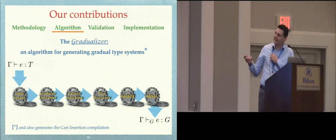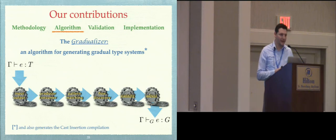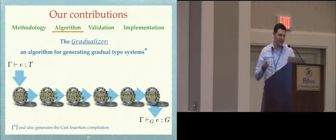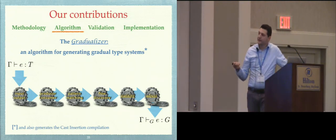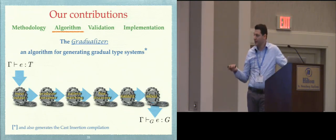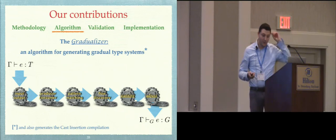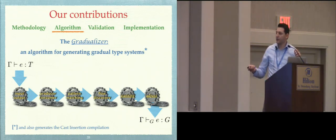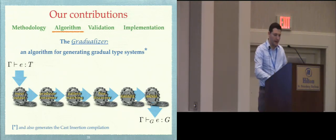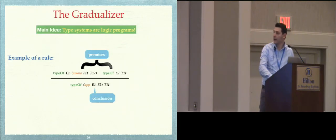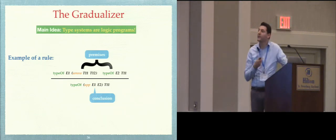The Gradualizer is an algorithm that makes the methodology completely automatic. It takes a type system represented somehow, goes over formal procedures, and automatically gives you the gradual type system. The main question you might have is how we represent the type systems.